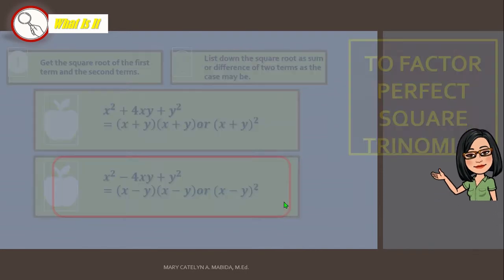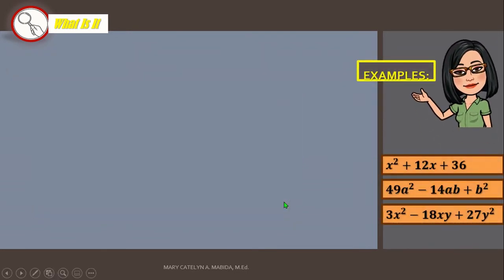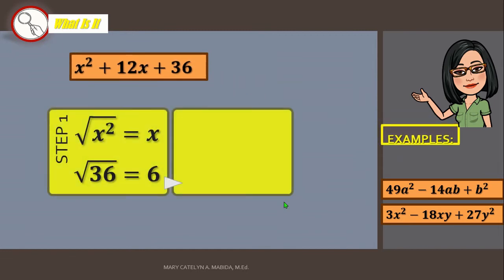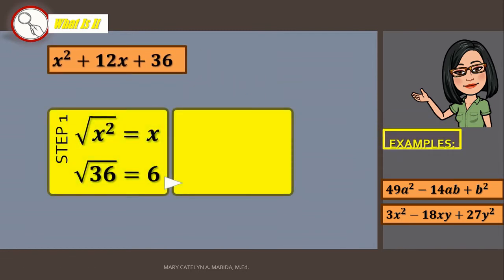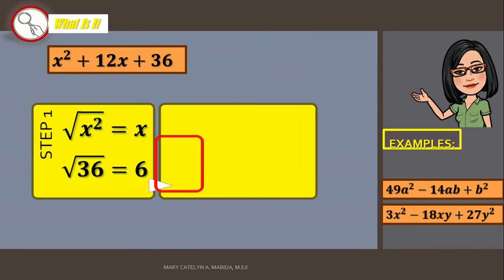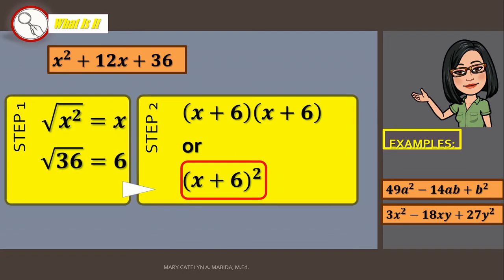Now, let's move on to our examples. Number 1. Factor x squared plus 12x plus 36. Step number 1, get the square root of the first and the last term. Step number 2, list the square roots as the sum or difference of two terms. Now, what is our first operator? You got it! It is addition. And therefore, our square of a binomial should also be an addition. Bravo!